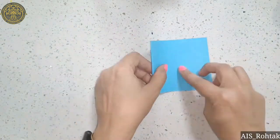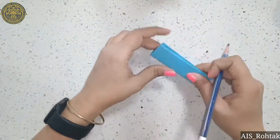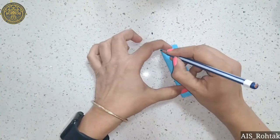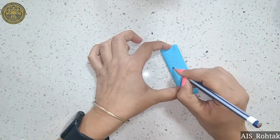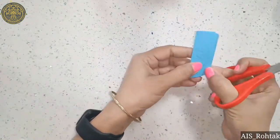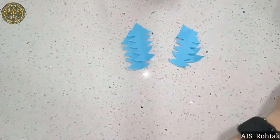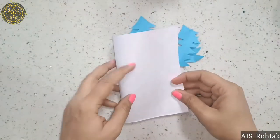Now we take a middle tone blue color sheet, fold it into half, again fold into half, then fold into half again. Now draw a tree like this and then cut it.